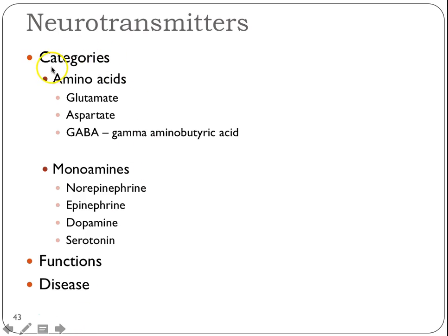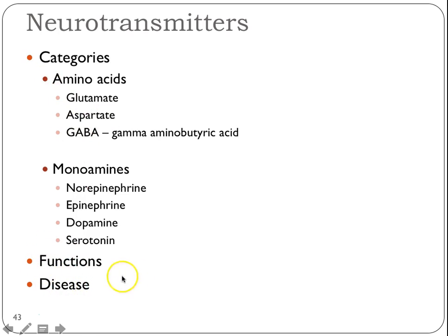Neurotransmitter-wise, we have a couple of different categories: amino acids and something called monoamines. Here are just some examples of amino acids and monoamines. We're going to talk a little bit about each one of these, their functions, and what diseases they've been implicated in — very superficially.